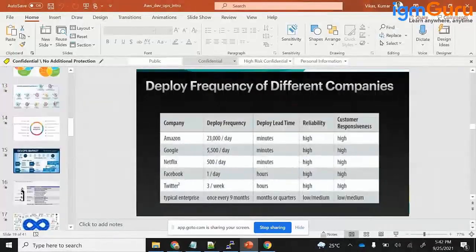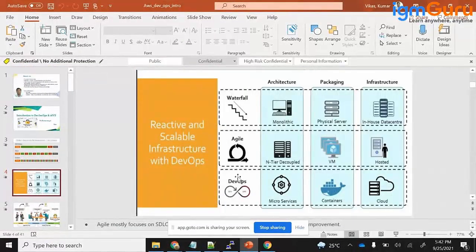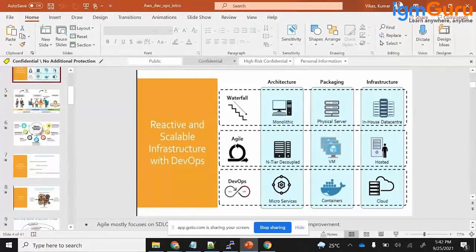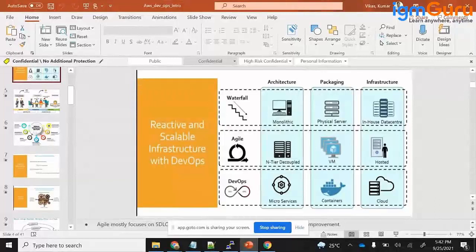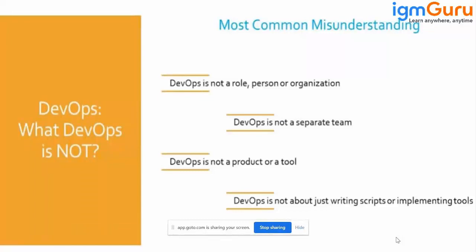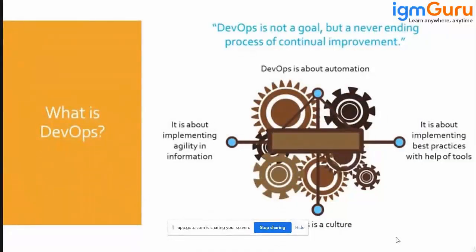DevOps is the need of the hour. If I have to grow in this competitive world, the organization will need DevOps. Now DevOps comes with many rumors — some say it's a role, some say it's a team, some say it's just tools and scripts. But DevOps is a never-ending process of continuous improvement. It's about bringing agility to the team, so when the customer wants a change, you can make it quickly.